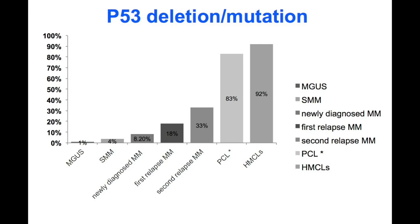Deletions of 17p are primarily seen in about 10% of myeloma patients at the time of diagnosis, but they can increase as time goes by. In one study, we found that the more treatment a person has received, the more likely they may have this 17p mutation. While the two major groups — hyperdiploid and non-hyperdiploid with translocations — don't change over time, there are some events like 17p that may be acquired over time. These are what we call progression events.